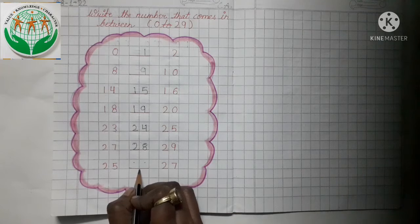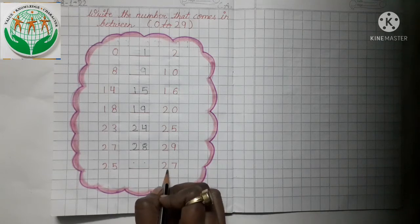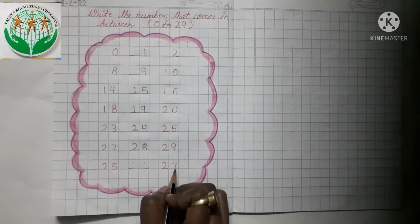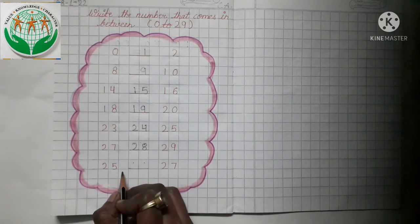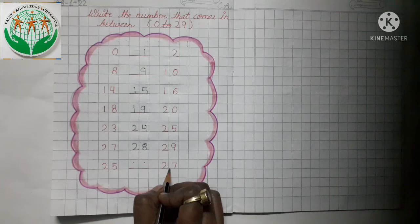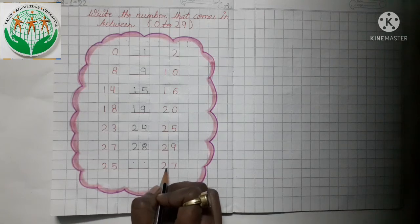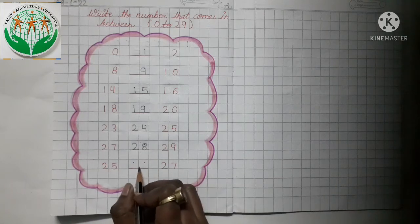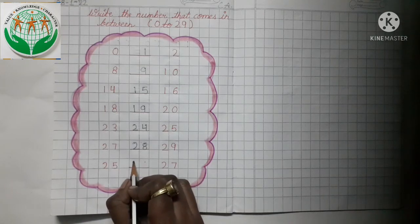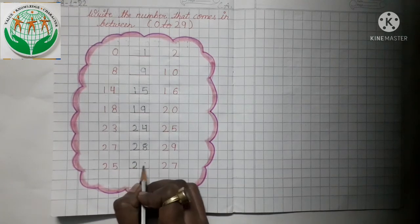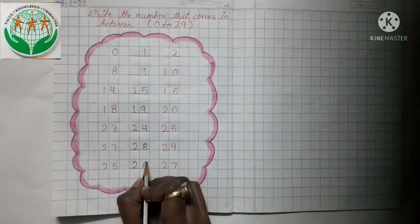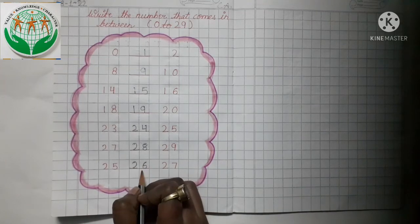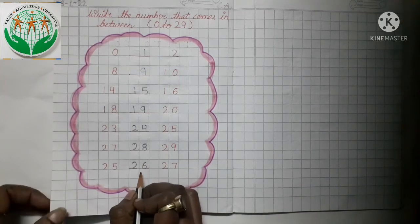25 dash 27. Now tell me what comes in between 25 and 27. Yes — 26. So we write here number 26.